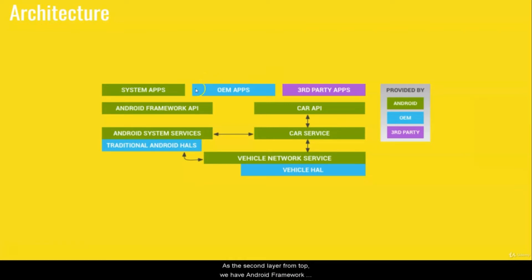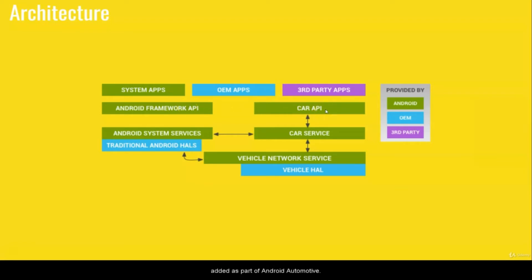As the second layer from the top, we have the Android Framework API and the Car API. The Android Framework API belongs to the standard Android OS, and the Car API is added as part of Android Automotive.